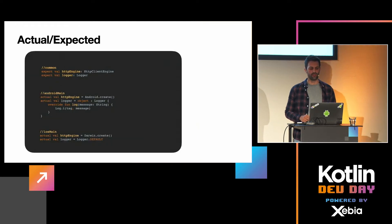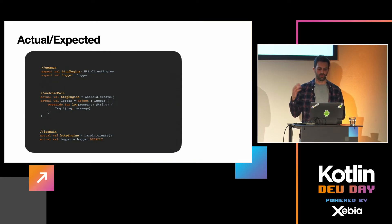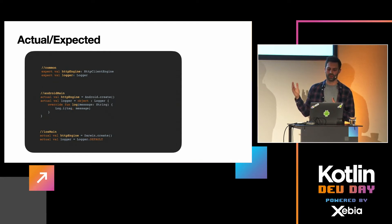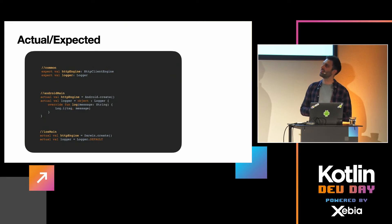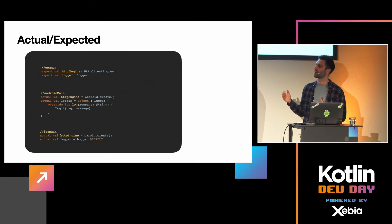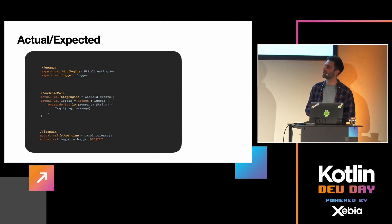Here is how it looks for the HTTP engine and logger. In common code we declare expect vals, and in androidMain and iosMain we provide the actual declarations: Android.create() and Darwin.create().